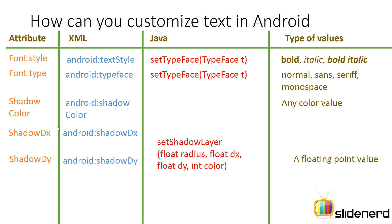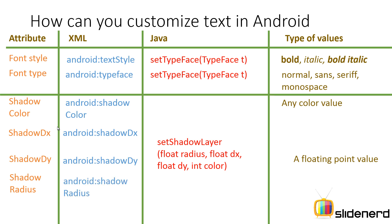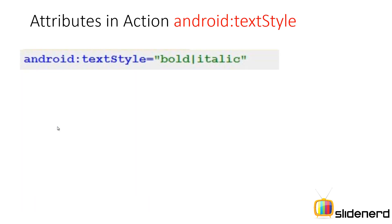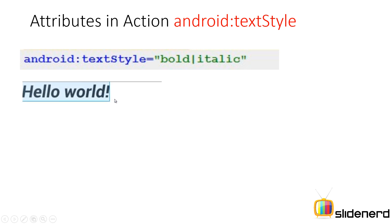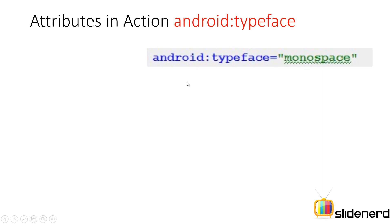Similarly, shadowDy is the distance along the y-axis from where your shadow should start relative to your text. Just remember these two attributes control where your shadow appears. Then you have shadow radius — a small radius makes the shadow sharp, and a higher radius starts blurring the shadow out. For android:textStyle, you can use bold or italic, or combine them with a pipe character to make the text both bold and italic. For android:typeface, a value like monospace will display the text in monospace exactly as you want. For a custom font, we'll see in the next video how to load it, but for now stick with the four default values.